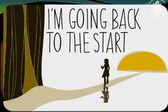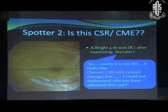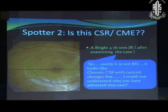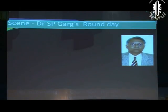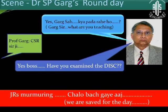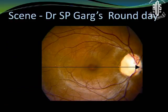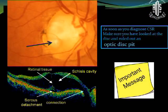Going back to spotter number two — Professor asked another JR to see. He said, sir, surely it is not RD; it looks like a chronic CSR with degenerative changes, but I could not understand why you admitted this case. Just then our saviour entered — it was Professor Tiwari. He asked what was being taught, and was told CSR. The next thing Professor Tiwari asked was: yes, but have you examined the disc? That lies the secret of unravelling the mystery of this case. It actually turned out to be a case of optic disc pit. As soon as you diagnose CSR, make sure you have looked at the disc and ruled out an optic disc pit.